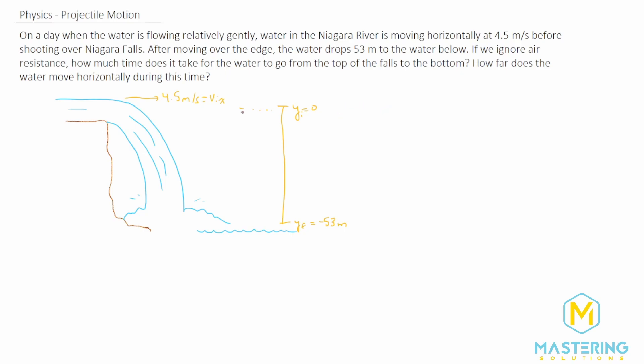What we'll do is we're going to use the y component to solve for the time, and then we'll use that time and multiply it by the x velocity to find how far it went from the base of the cliff.